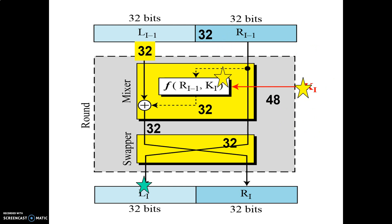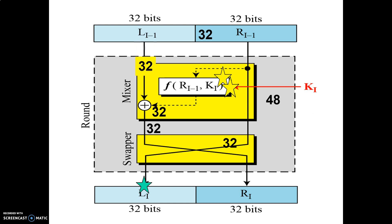Next, I will take the 32-bit right hand side and the 48-bit key and send them as input to my Mangler function, getting a 32-bit output. I will then send this 32-bit output as an input to the XOR function, along with the 32 bits from the left hand side. The result — again 32 bits — becomes the new RHS output of round one. This process is going to continue for all 16 rounds.